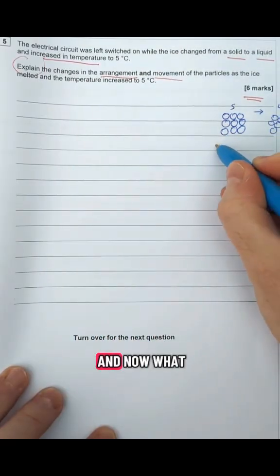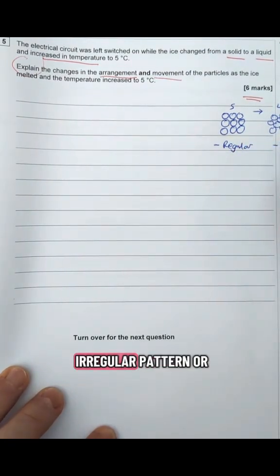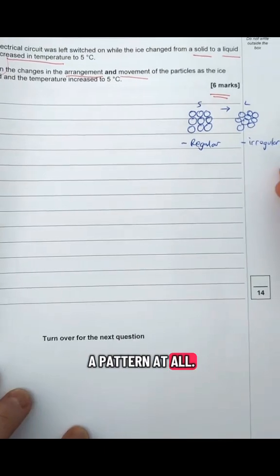Here are the particles in a solid. Their pattern is regular, whereas in a liquid they have an irregular pattern or they don't have a pattern at all. Next we're going to talk about